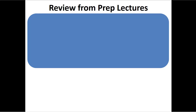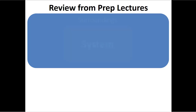We start off by looking at the universe — this is really a class about how the universe works. Our big blue blob here represents the universe, and we're going to split the universe into two pieces: our system, which is the part of the universe we're more interested in, and the surroundings, which is everything in the universe outside of our system.